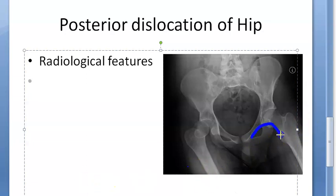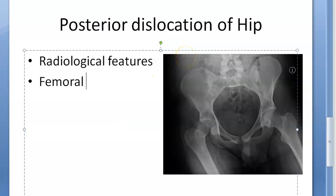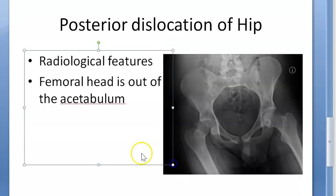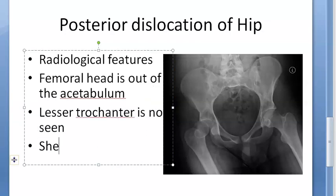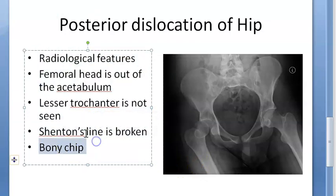Shenton's line will be broken. You can also look for a bony chip from the posterior lip of the acetabulum or from the head of the femur. The femoral head is out of the acetabulum, the lesser trochanter is not seen, Shenton's line is broken, and there may be a bony chip from the posterior lip of the acetabulum or from the femoral head — because the head has to break through the acetabulum to go behind.